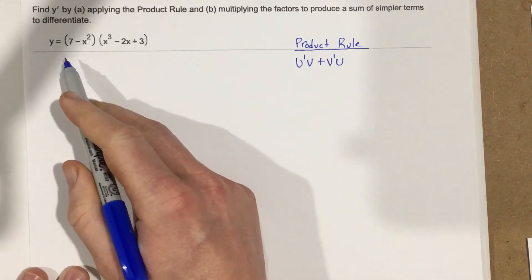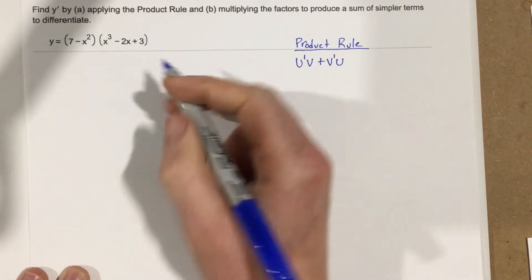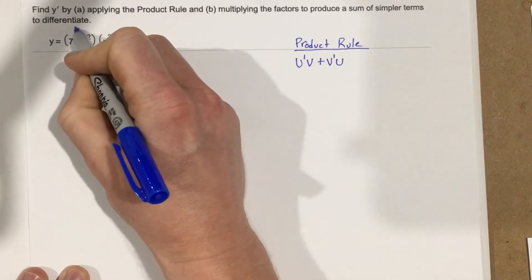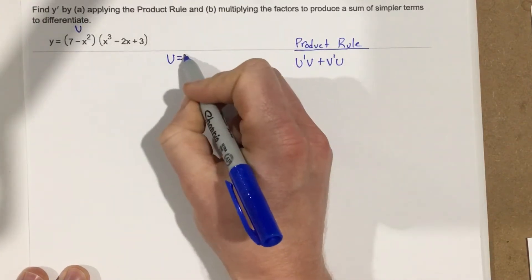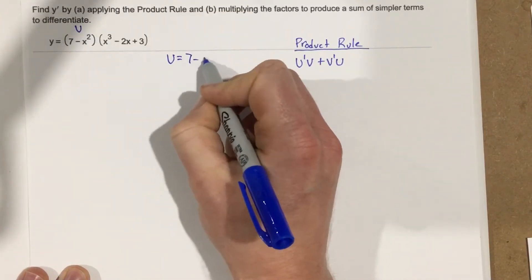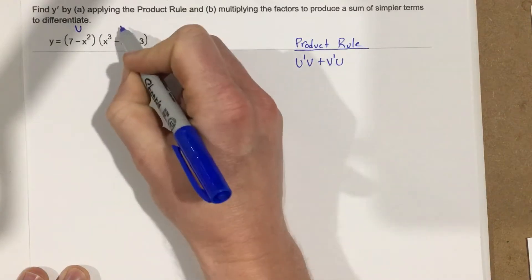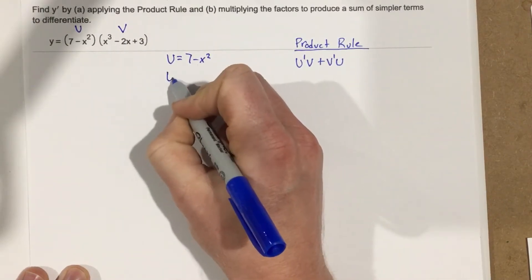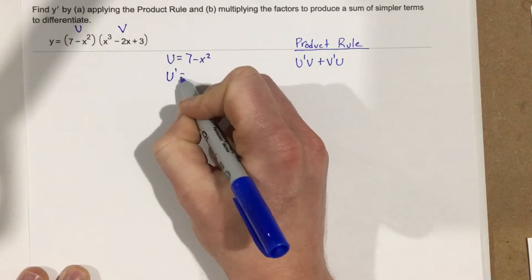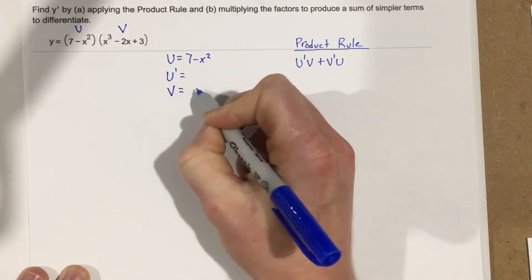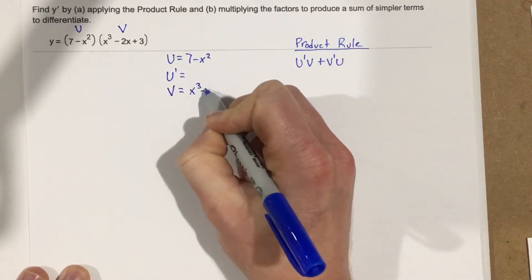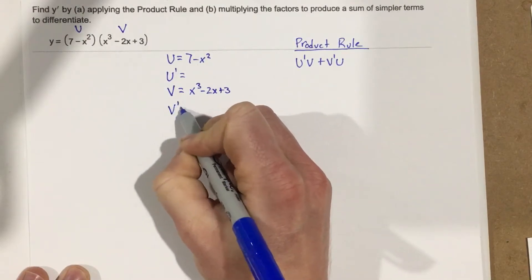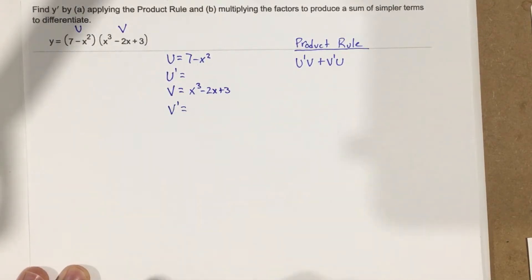The way I like to set this up is: u is the first function, which is 7 minus x squared. Then I write u prime. v is the second function, which is x cubed minus 2x plus 3. And then v prime, which is the derivative of that second function.